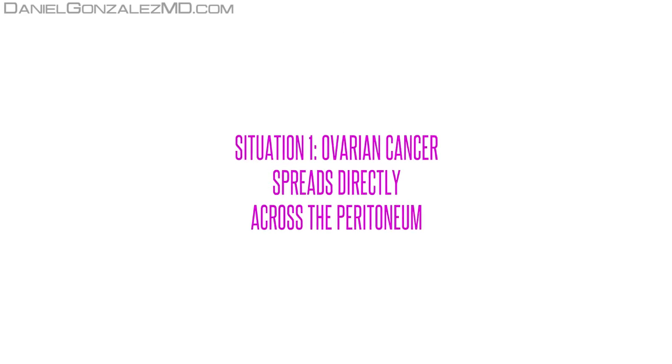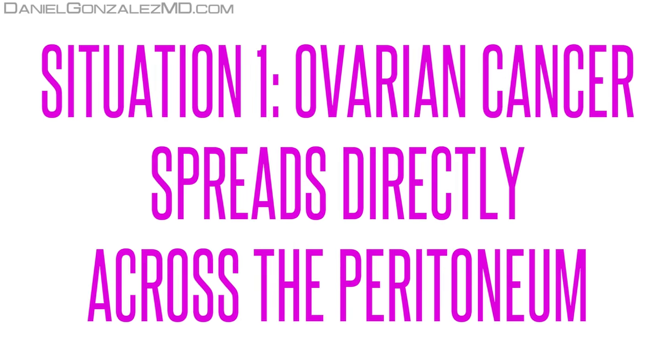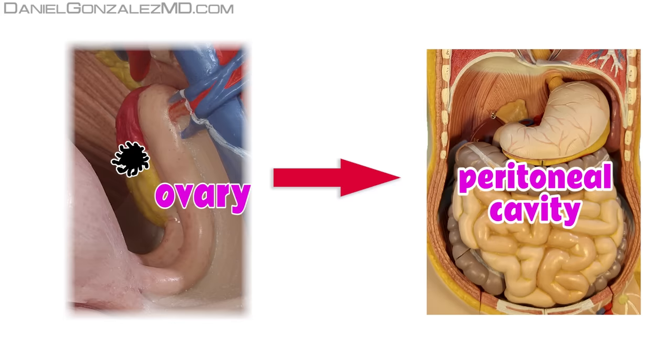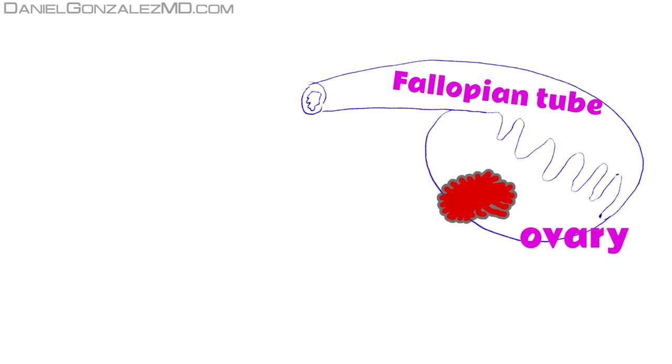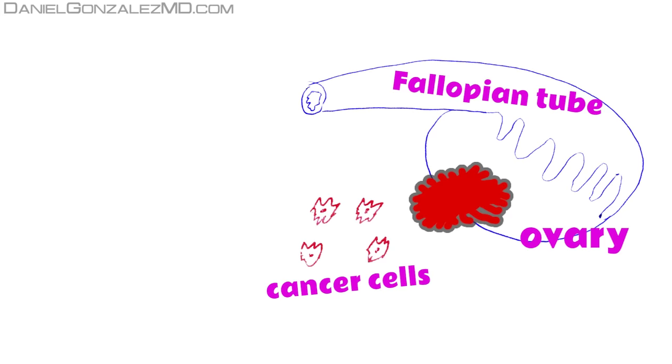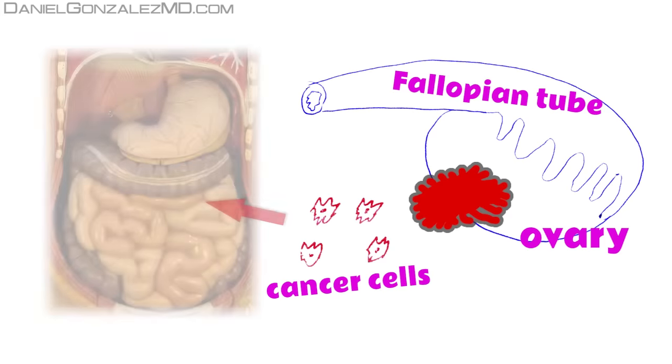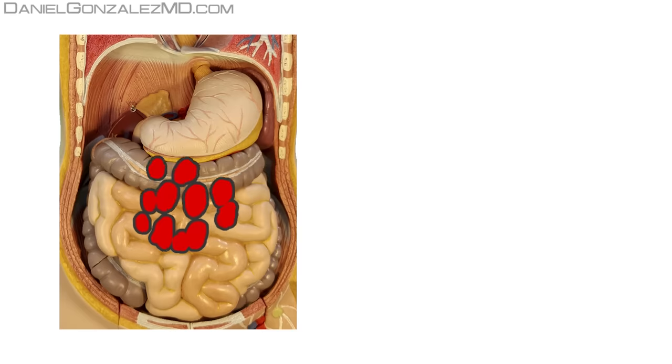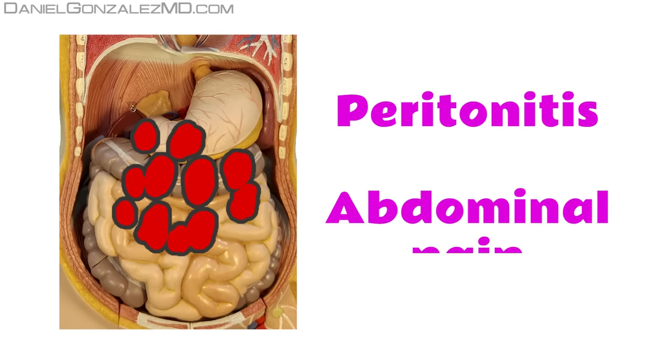Situation 1. Ovarian cancer spreads directly across the peritoneum. Ovarian cancer can spread through the peritoneal cavity, that is, a virtual cavity lined by the peritoneum to enable frictionless movement of the abdominal viscera. If cells of ovarian cancer enter the peritoneal cavity directly because the tumor has grown and has broken the peritoneum covering the ovary, these cancer cells start to swim and can be placed anywhere in the abdomen.